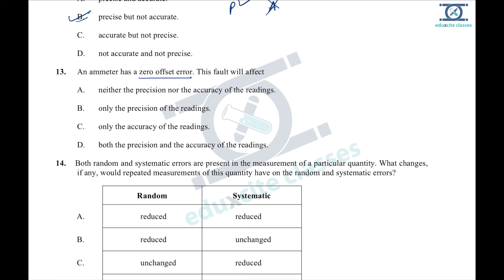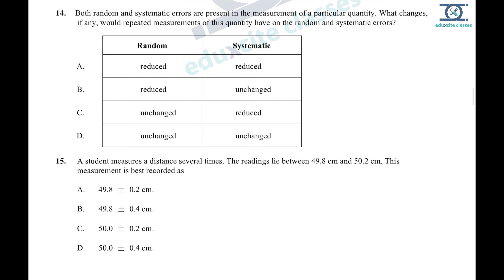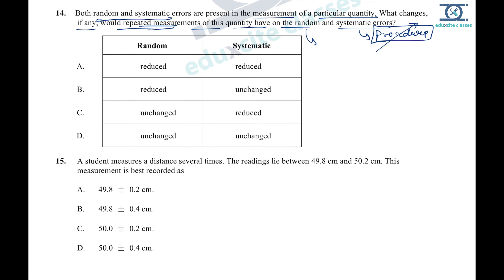Question 13: an ammeter has a zero offset error. This fault will affect the accuracy of your readings — that is option C. Question 14: both random and systematic errors are present. Repeated measurements reduce random error because random errors are caused by unpredictable variation. Systematic errors can be identified and corrected through procedure. So repeated measurements reduce random error with no change to systematic error — option B.